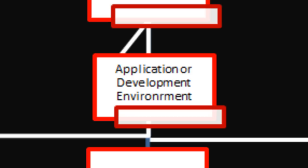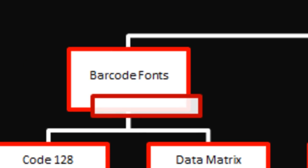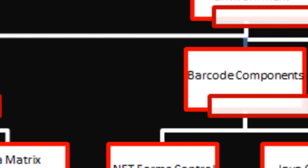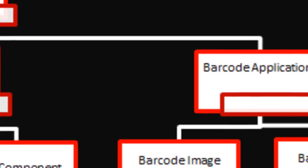There are three major types of barcode products: barcode fonts, barcode components, and barcode applications.